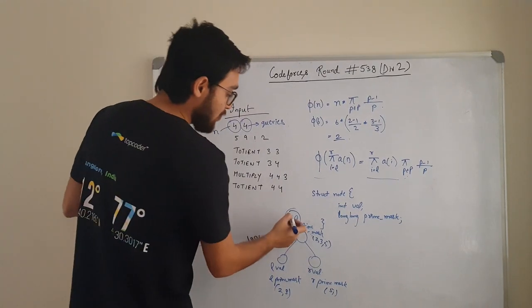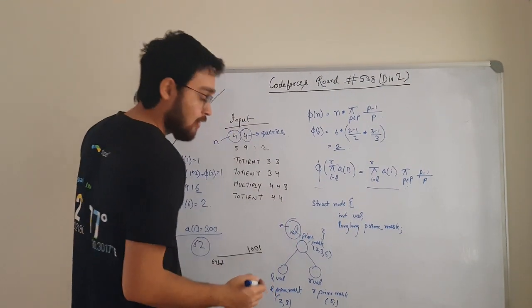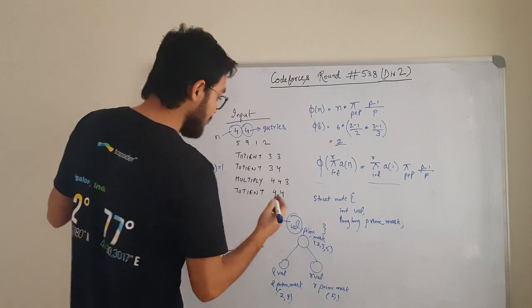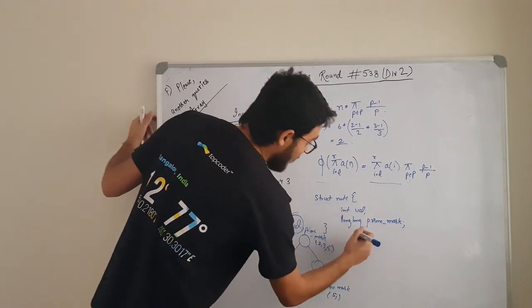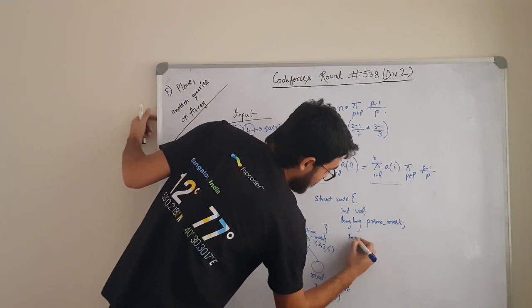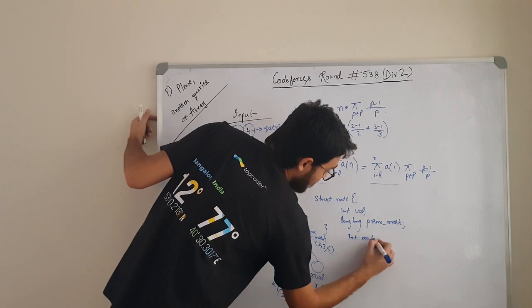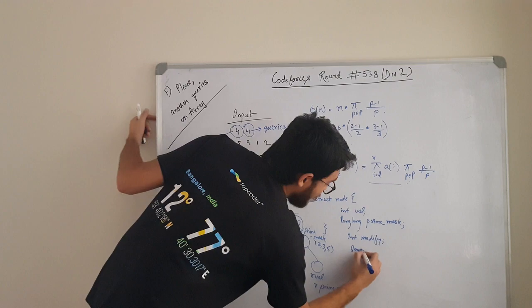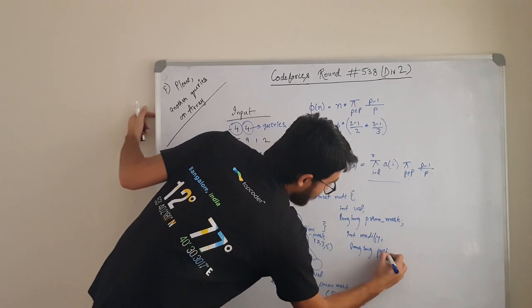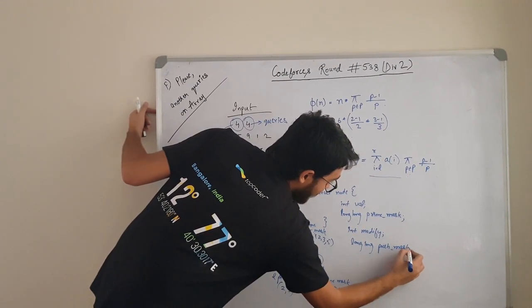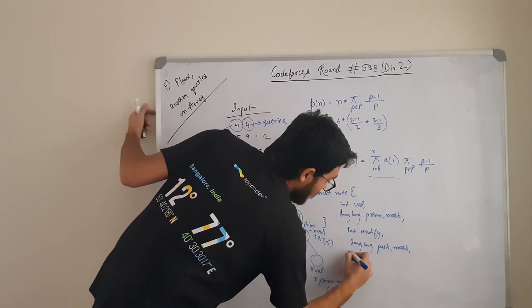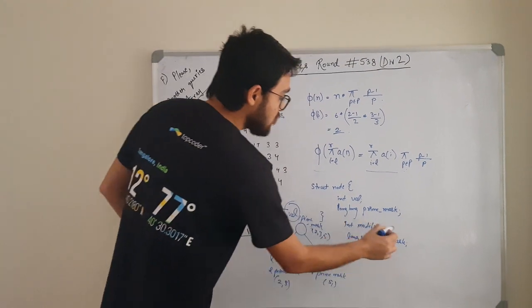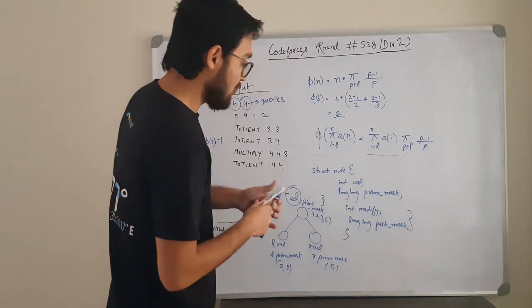For lazy, for this one, we can have one more lazy thing here. I will add int modify and for this prime_mask, I will store long long push_mask. Now, these two are required for lazy.